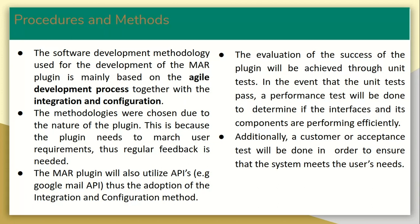The justifications for choosing these methods are that, due to the nature of the plugin, we decided to use the agile process to ensure the plugin aligns with user requirements. We will evaluate the success of the plugin after development to see if it has met our anticipated goals. We will start with unit tests to test components individually, then a performance test to determine if the interfaces and components are performing efficiently, and finally a customer acceptance test to ensure the system meets user needs.